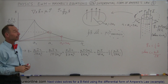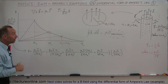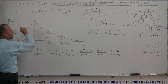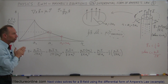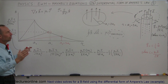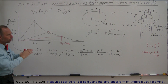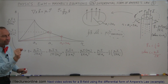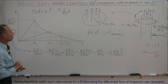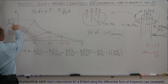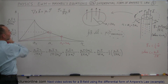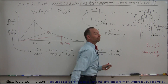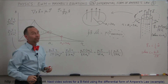Hopefully that made it clear. Be careful how you use the differential form — make sure you assume even distribution of the current over the entire region you're considering, then find the B field at the edge of that region using the differential form rather than the integral form. I hope that helps.